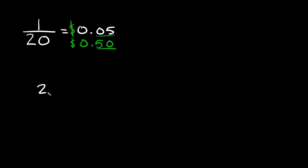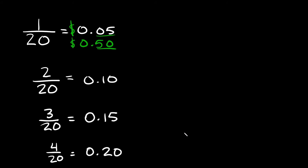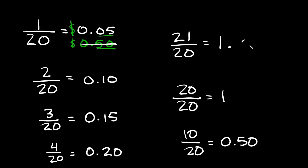If I had two nickels, that would be 0.10, or ten cents. Three out of twenty would be fifteen cents. Four out of twenty would be twenty cents. Ten out of twenty would be fifty cents — written as 0.50. Twenty over twenty would be the same thing as one dollar. And twenty-one over twenty would be equal to one dollar and five cents.